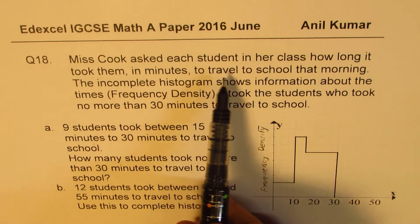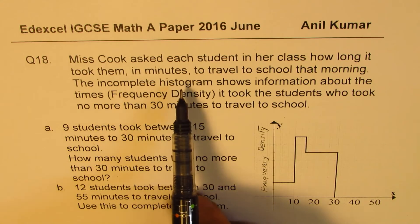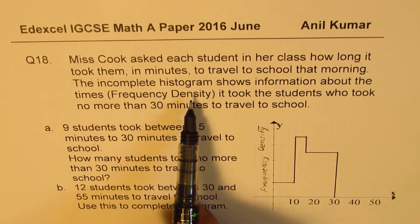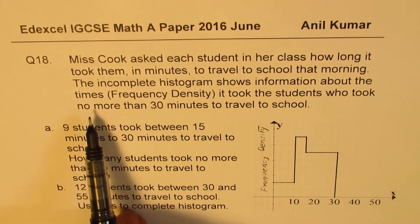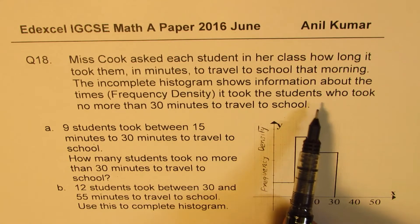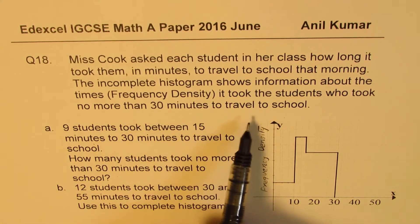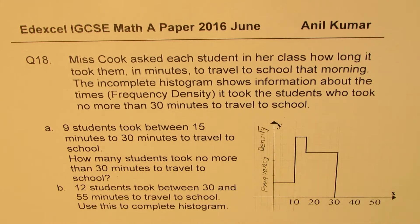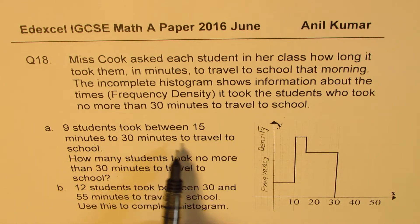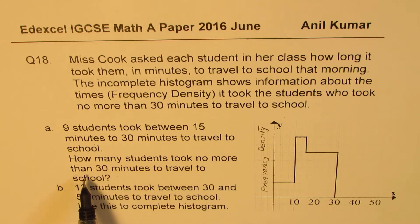Ms. Cook asked each student in her class how long it took them in minutes to travel to school that morning. The incomplete histogram shows information about the times — that is the frequency density — for students who took no more than 30 minutes to travel to school. Part A: 9 students took between 15 minutes to 30 minutes to travel to school. How many students took no more than 30 minutes to travel to school?